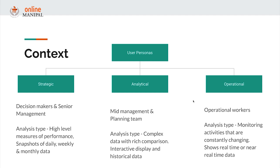When building any analytical application, there can be three different types of user personas: strategic users, analytical users, and operational users. Strategic users include senior management and CXOs — these people want to make long-term decisions about business strategy. Top-level information about how the business is performing, key trends, and KPIs helps them make decisions better and faster.